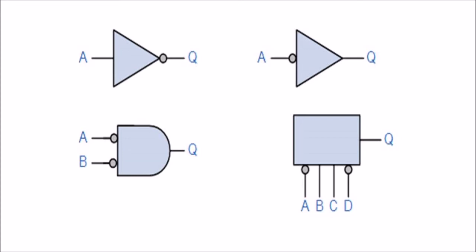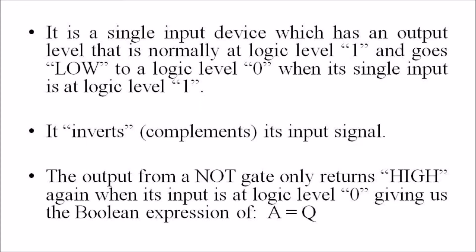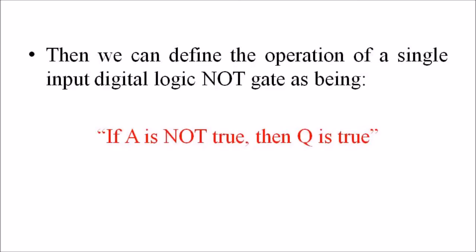So students, in this lecture we discussed the logic NOT gate. The logic NOT gate is the most basic of all logic gates and is often referred to as an inverting buffer or simply an inverter. It is a single input device which has an output level that is normally at logic level 1 and goes low to logic level 0 when its single input is at logic level 1. In other words, it inverts or complements its input signal.